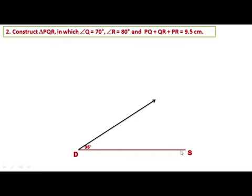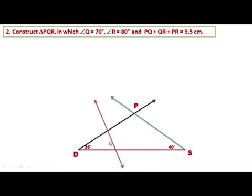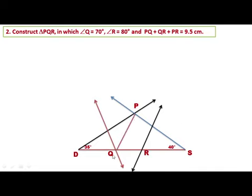Draw the angle at point S of measure 40 degrees. Here the angle is 40 degrees and here 35 degrees. This intersection point is vertex P. Then draw the perpendicular bisector of segment PD and the perpendicular bisector of segment PS.